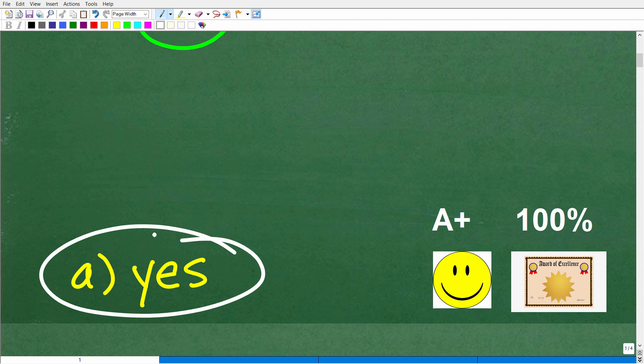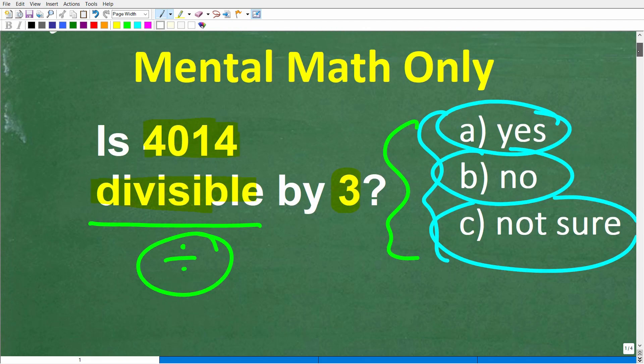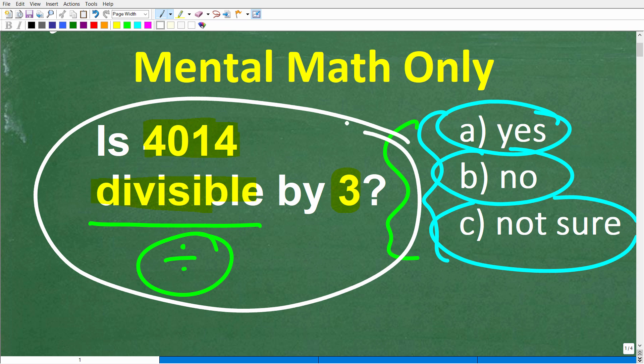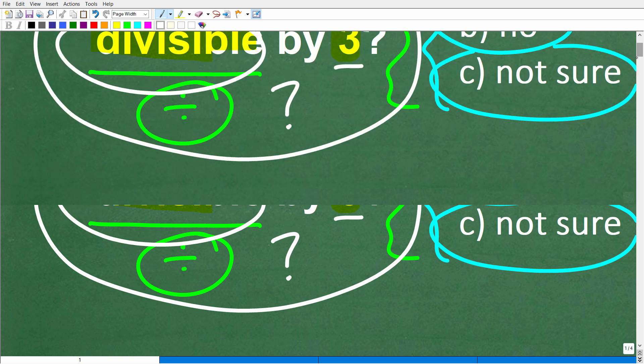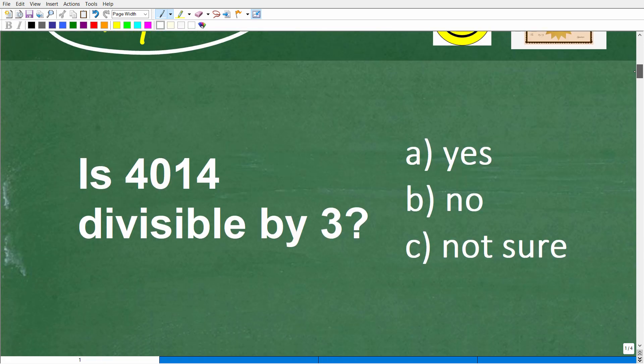All right. Now, if you got this right, you definitely get a happy face and A plus, a 100%, and a certificate of excellence for being a certified professional expert in the area of divisibility rules, if indeed you only use mental math. So, of course, anyone can get their calculator and just type in 4014 and divide it by 3 and look at the answer. But if you're not sure what this word means, even then, this can be confusing. So hopefully, you understand the word divisible because this is an important math word. But for those of you that are a bit confused, no big deal. This is very easy. And let's get into this right now.